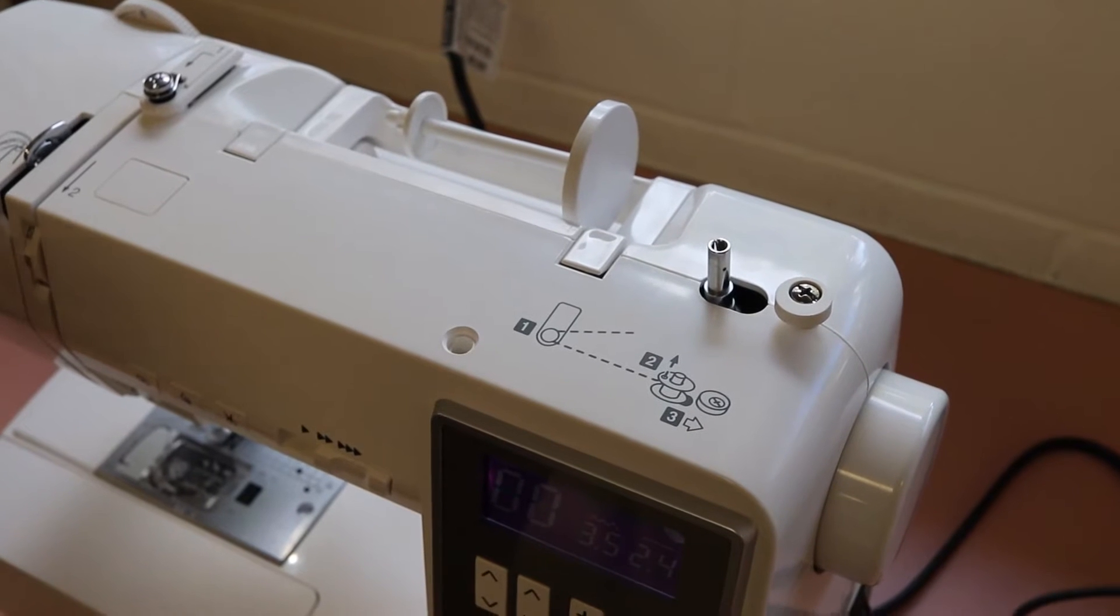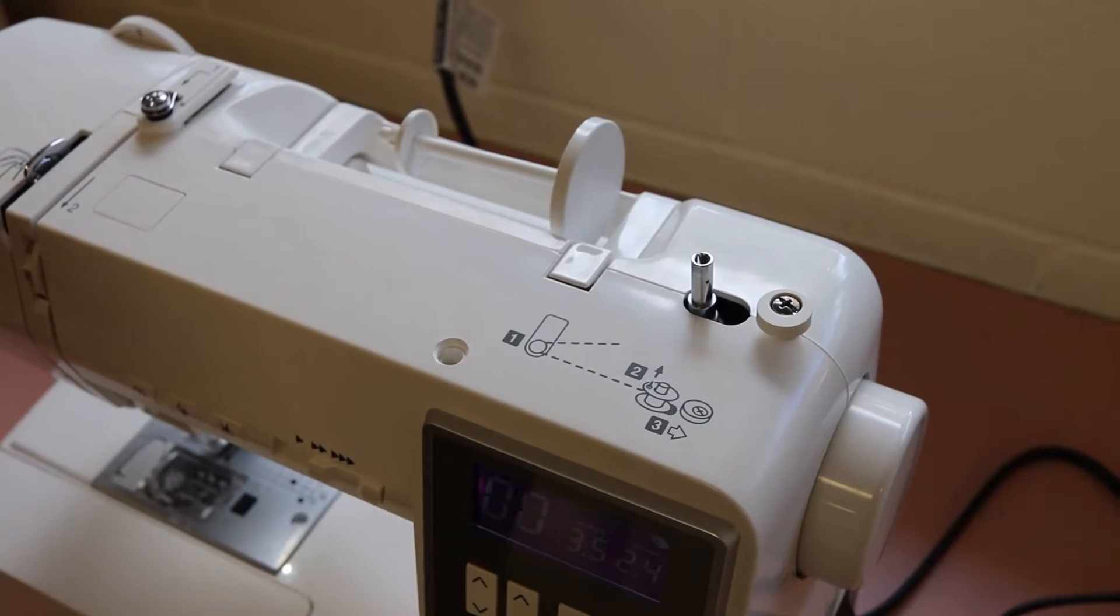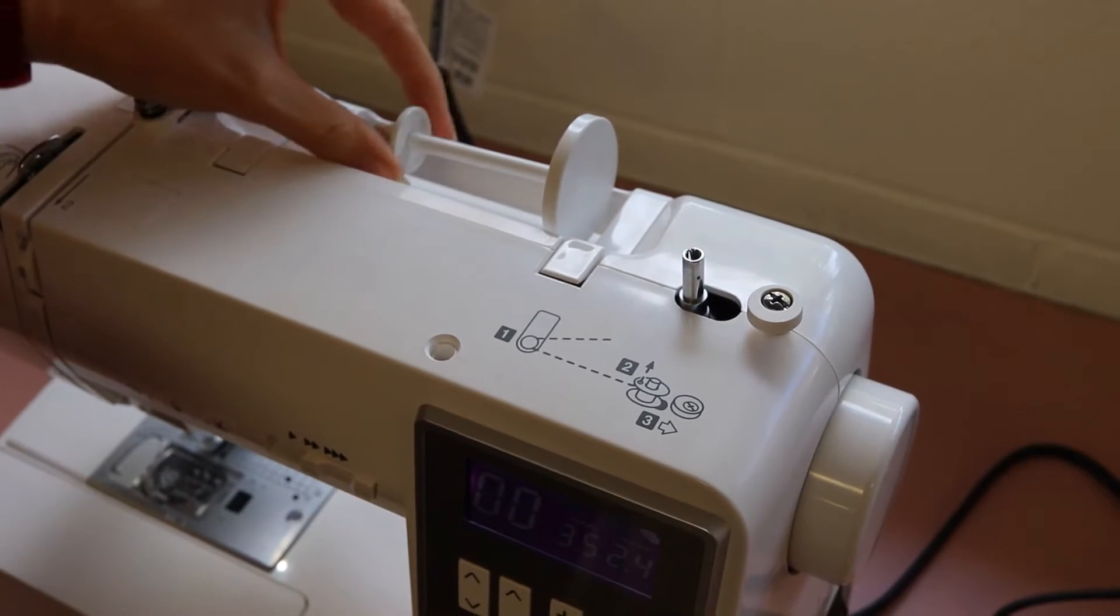Okay, so in this video we're going to show you how to put thread onto a bobbin. First up, you need to get your roll of thread and take off this stopper.